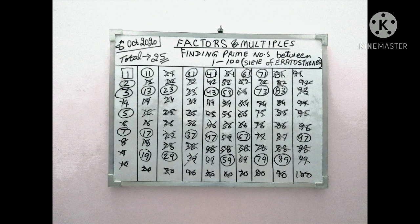Very easily we can distinguish that 1 is neither prime nor composite. All the encircled numbers are prime numbers. All the crossed out numbers are composite numbers.